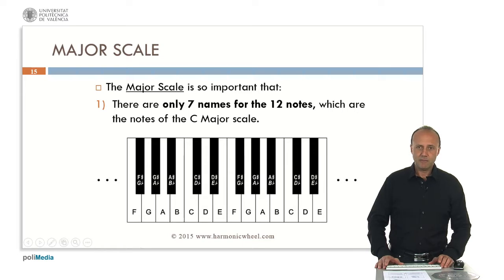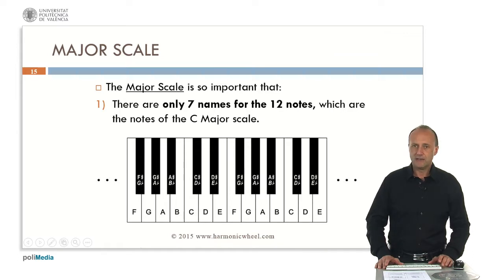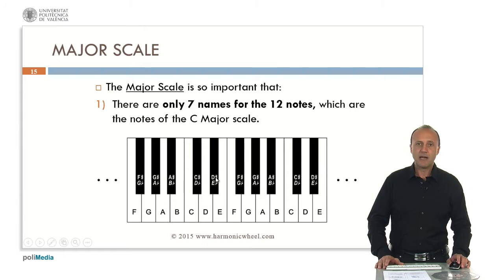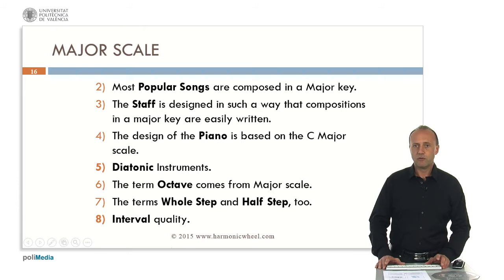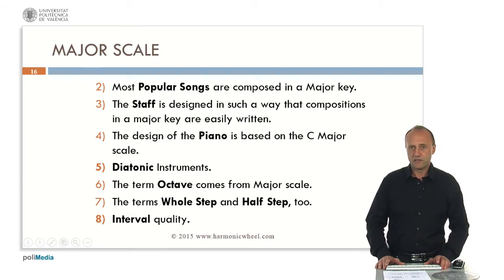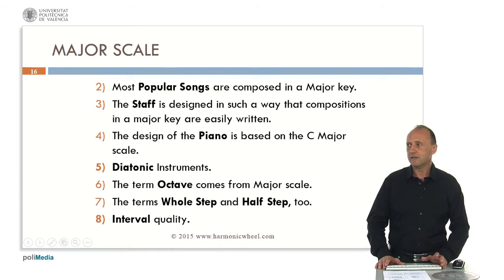The importance of the major scale in music is huge. The major scale has seven notes, and this is the reason why we use only seven names for the twelve notes. These seven names correspond to the notes of the C major scale. In the piano, these seven notes correspond to the white keys, and the black keys correspond to the altered notes. Other reasons for the importance of the major scale are that most popular songs, and many other songs not so popular, are composed in a major key. The staff, which is the diagram we use to write music, is designed in such a way that compositions in a major key are easily written.